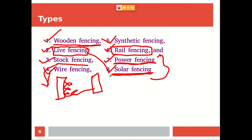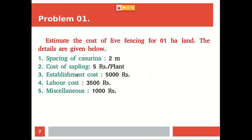Live fencing uses live materials. Subabul is commonly used as a live fence, along with many other fodder crops — so they serve as both fodder and fence. Nowadays farmers have transitioned to stone and wire fencing, which is more costly. It is advisable to use live fencing where possible to avoid higher costs. For corporate farming, wire fencing is not a problem. As part of our practical class, we have to estimate the cost of live fencing for one hectare of land.